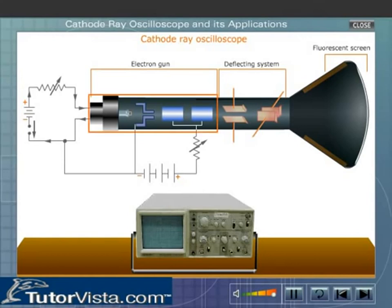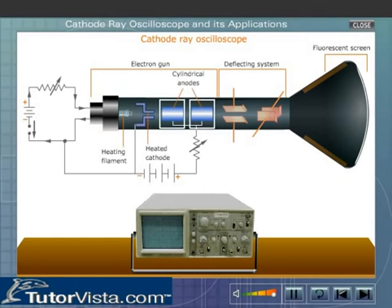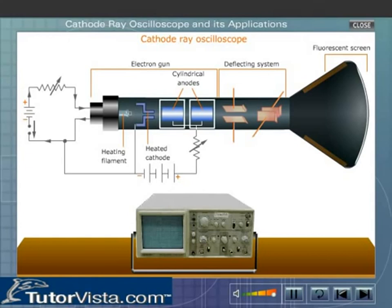The electron gun consists of a filament, a cathode, and two cylindrical anodes. The filament, connected to a low tension battery, indirectly heats the cathode. A double anode cylinder with a fine hole in it is placed in front of the cathode plate. The anode is maintained at a high voltage and it accelerates the electrons emitted by the cathode.